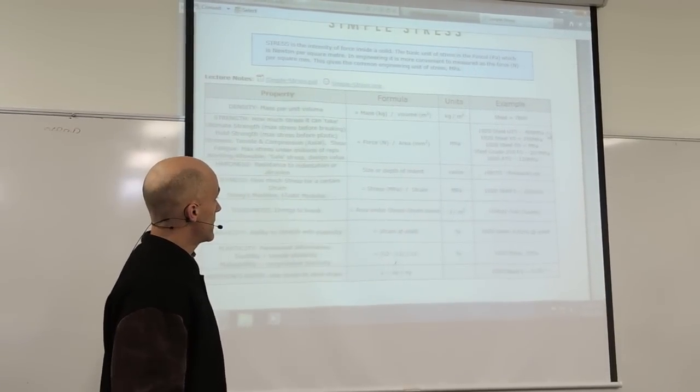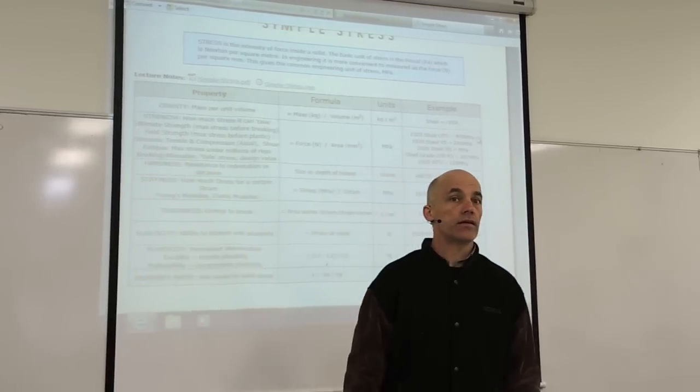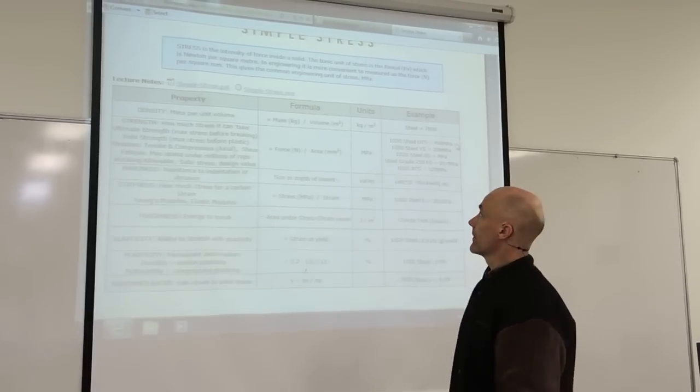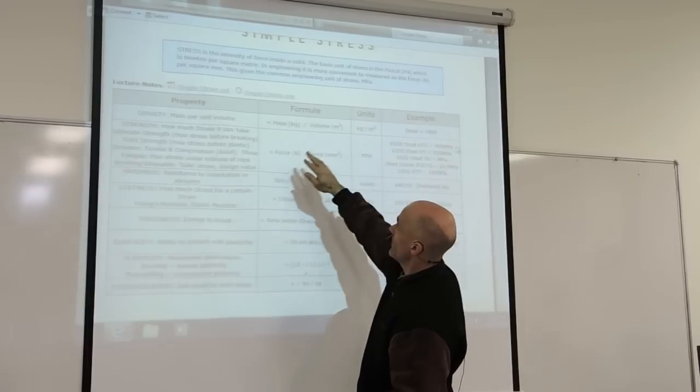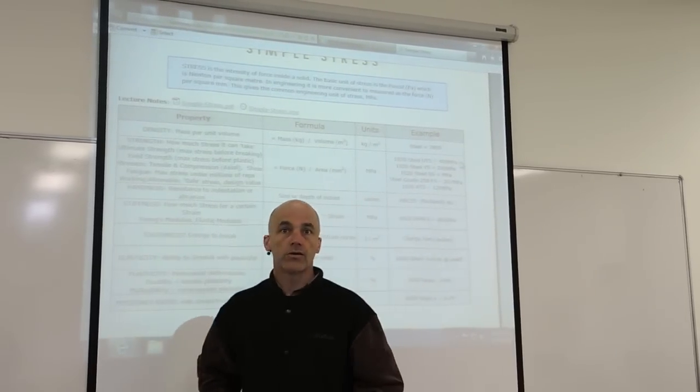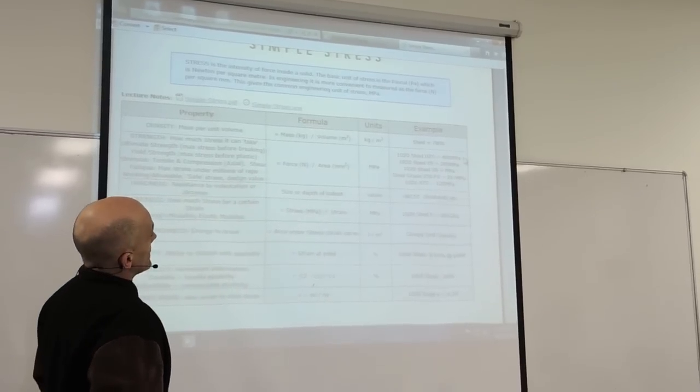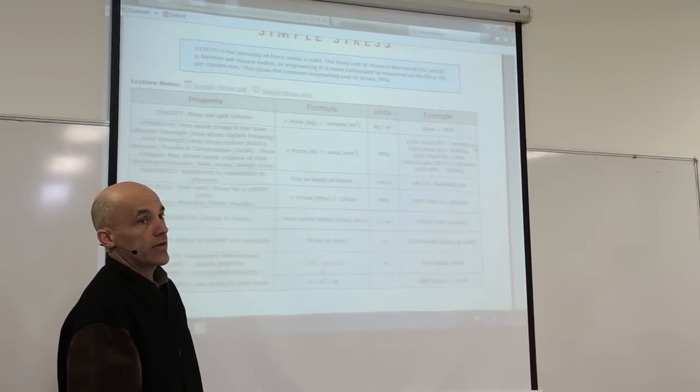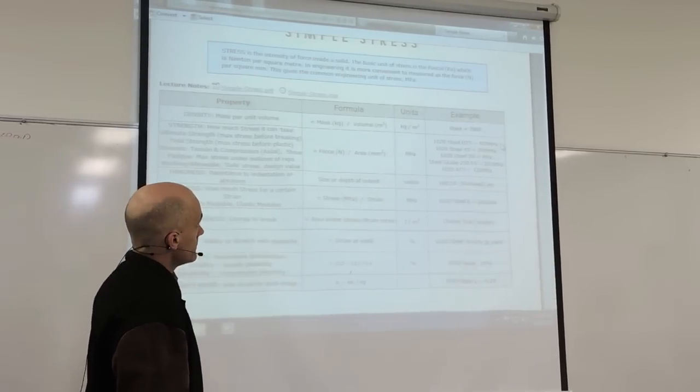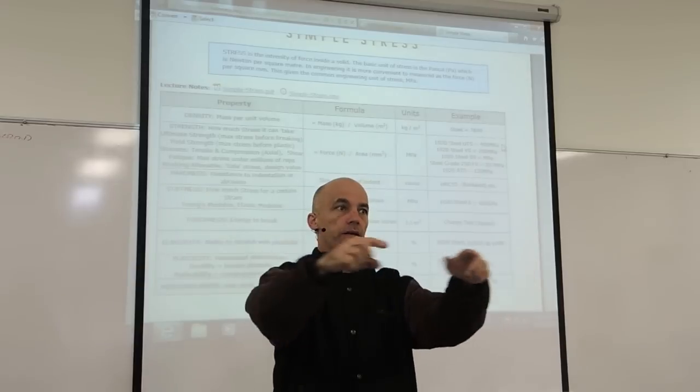Density is mass per unit volume. Watch out for the units. The mass is in kilograms, the volume in cubic metres, not in litres, in cubic metres. So that means the units for density is kilograms per cubic metre. So steel has a density of around 7,800 kilograms for a cubic metre of steel. So about almost eight tonnes for a metre by metre by metre block of steel.